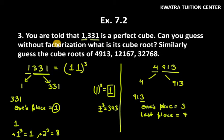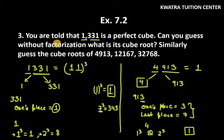Now the first group is 4. Which cubes is 4 between? It is between 1 cubed (which is 1) and 2 cubed (which is 8). The smaller number here is 1. This means the tens place is 1, and the ones place is 7. So the cube root of 4913 is 17.